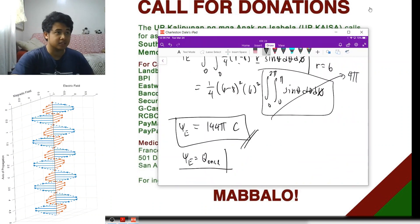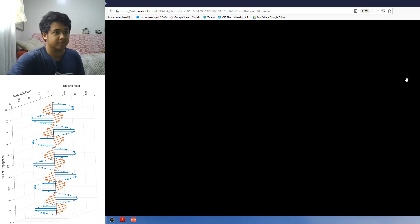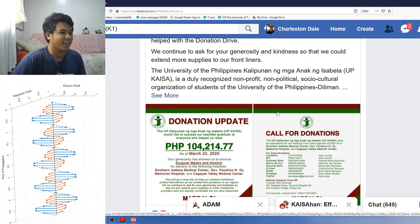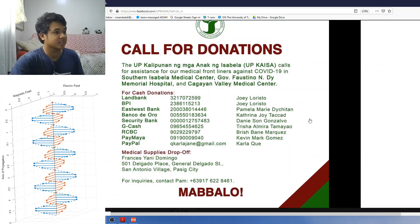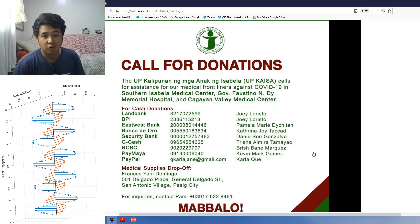Before we end this session, we have a call for donations from our organization. These are the contact numbers and the account numbers for the cash donations. If you have in-kind donations, you can forward them to the drop-off point indicated here. If you have any questions about them, you can contact Attorney Pam.